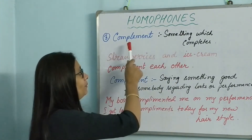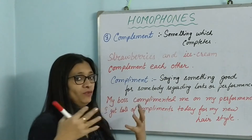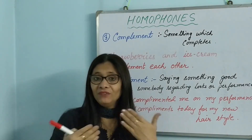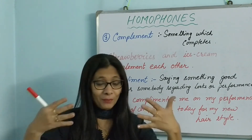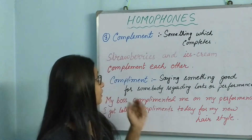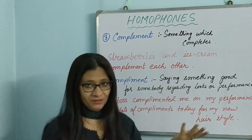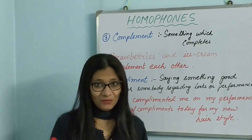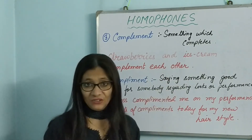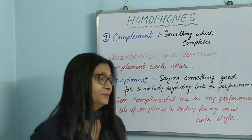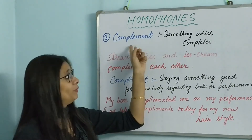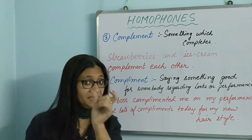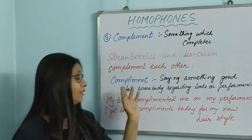Next: 'complement' with an E means something which completes something else. For example, bread and butter complement each other — we like bread with butter, they complete each other. Strawberries and ice cream also complement each other — put strawberries on vanilla ice cream and it tastes very good! Remember: 'complement' comes from 'complete' — C-O-M-P-L-E-T-E — so the E stands for completing something.